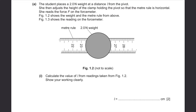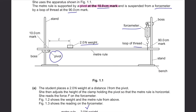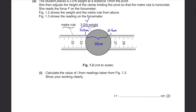Figure 1.2 shows the weight and the meter rule from above. Figure 1.3 shows the reading on the force meter. Calculate the value of L from readings taken from figure 1.2. Let's identify where the 2N weight is placed. The edge of the weight is at 23.5cm and the other edge is at 26.5cm, so it is placed at the middle which is the 25cm mark. But L is not 25cm because the pivot is at the 10cm mark.